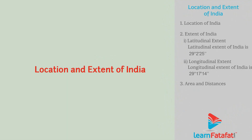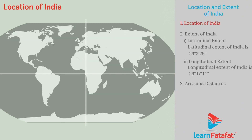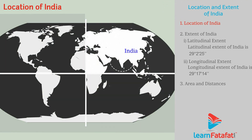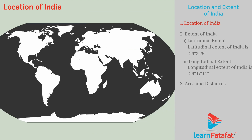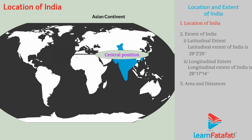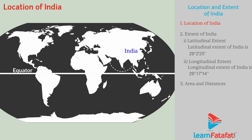Location and extent of India. India is located in the northern and eastern hemispheres, in the Asian continent. India has a central position in the southern part of Asia. An imaginary circle parallel to the equator of Earth at 23.5 degrees north is the Tropic of Cancer, and it passes through the central part of the country.